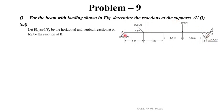At point B, a roller is placed at an angle. We have to find out the reaction at A and B. The beam is loaded by two point loads: 100 kN at 45 degrees, and 150 kN in the vertically downward direction. We have to find the reactions due to these two loads.